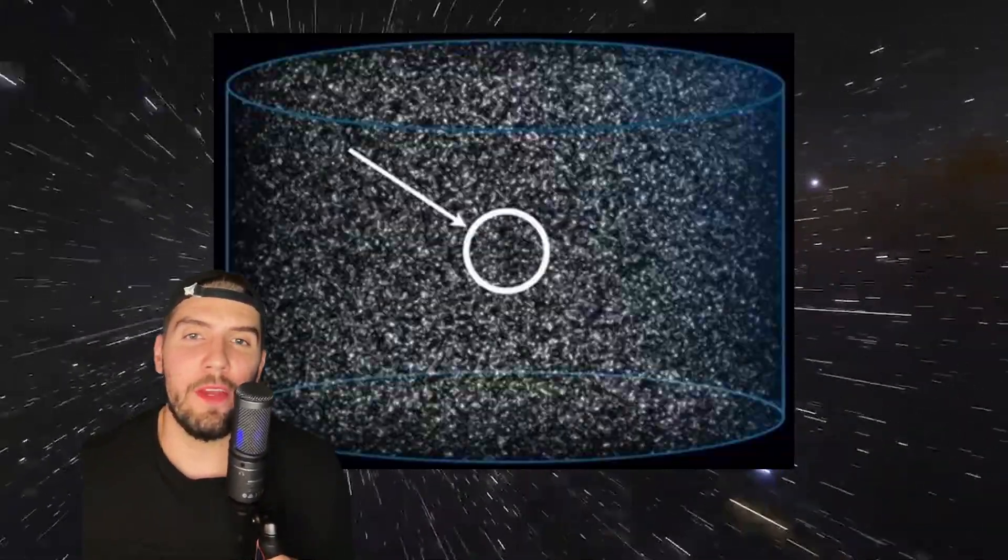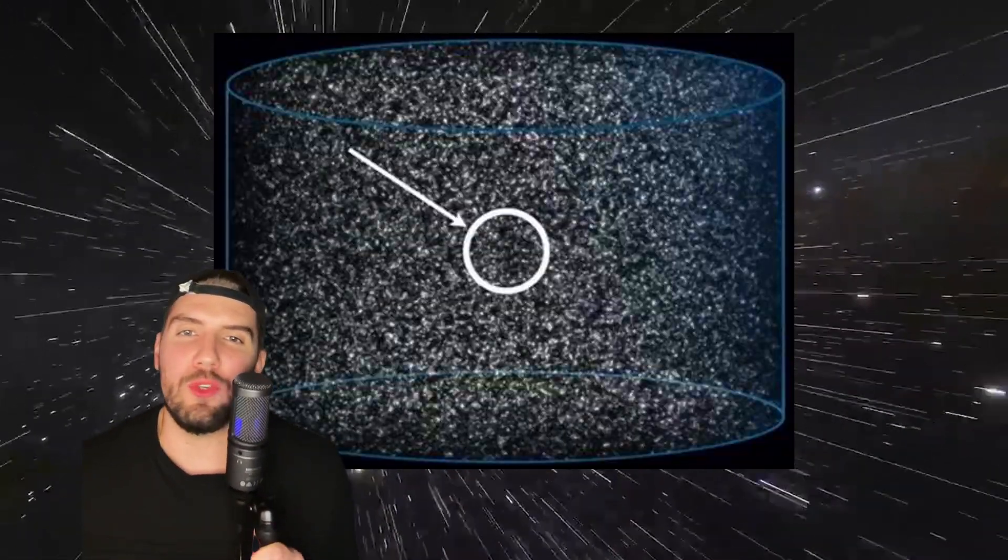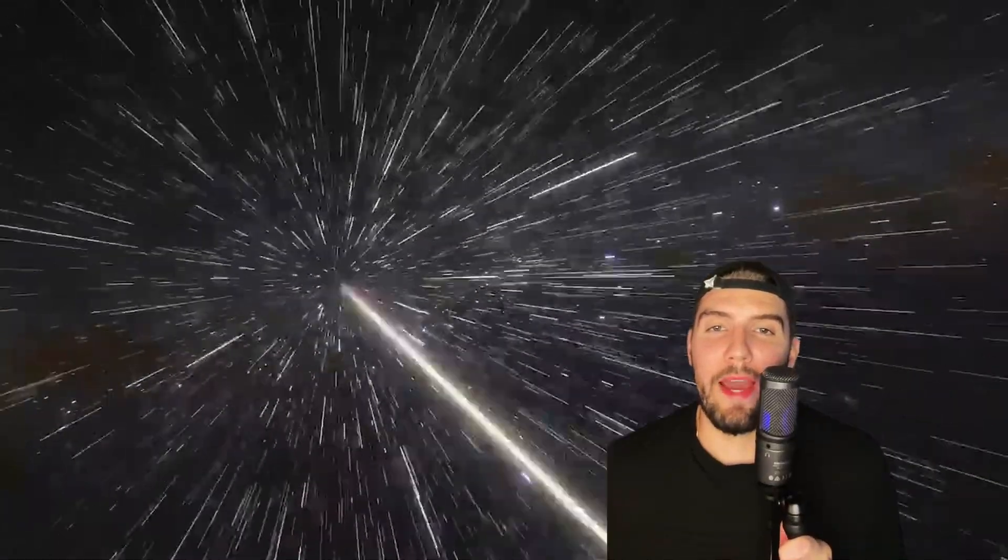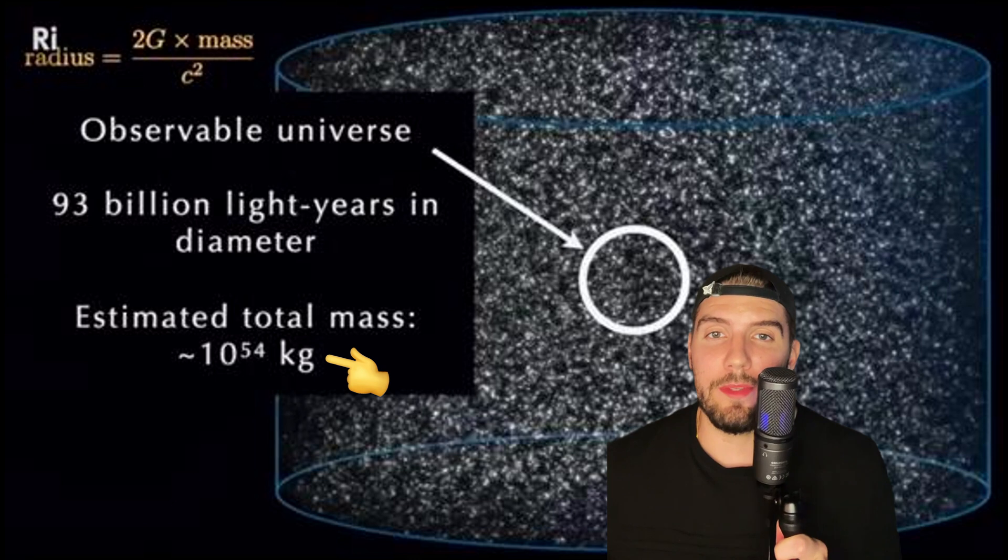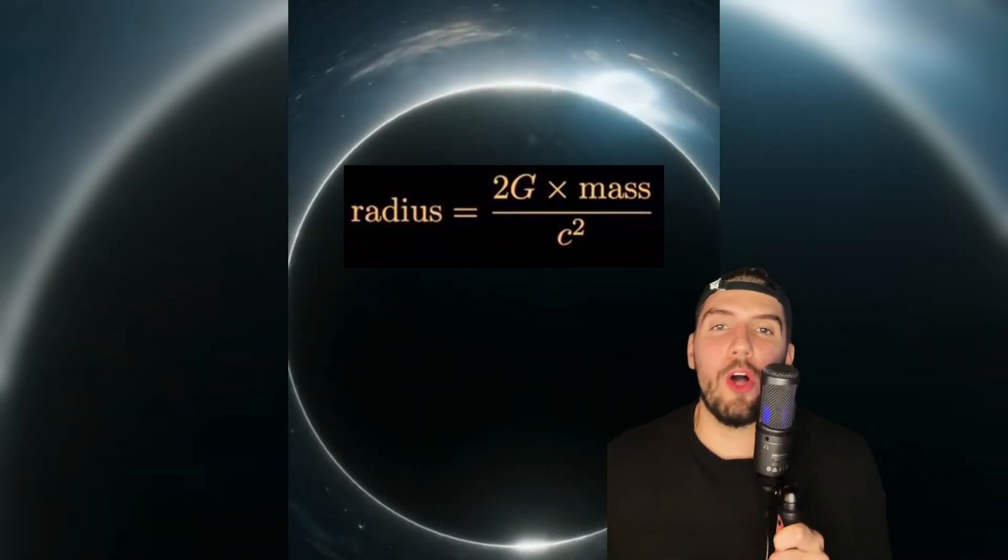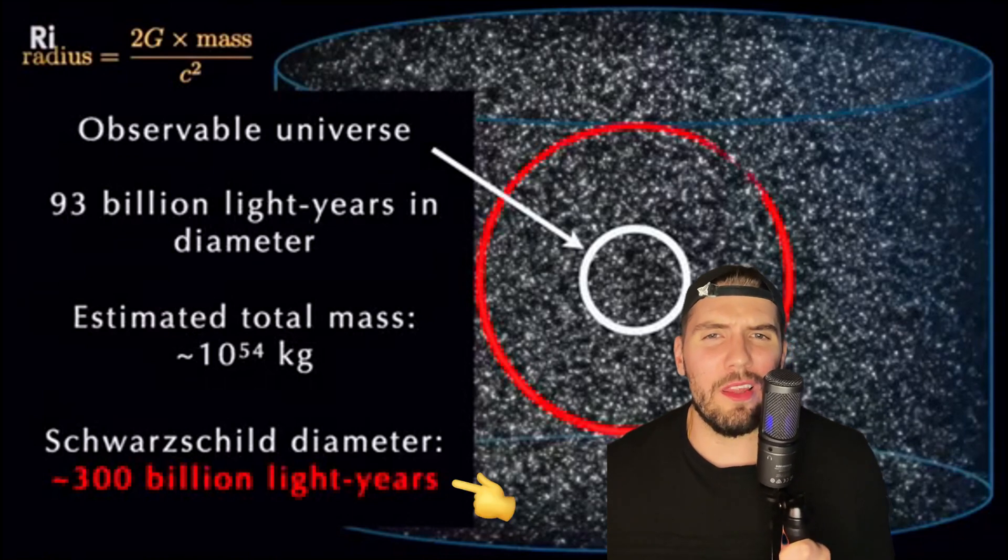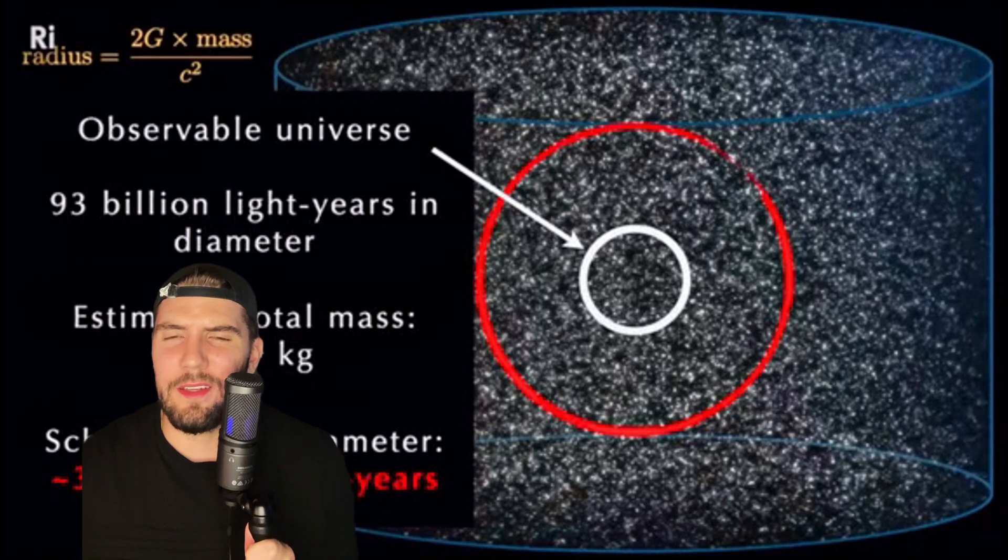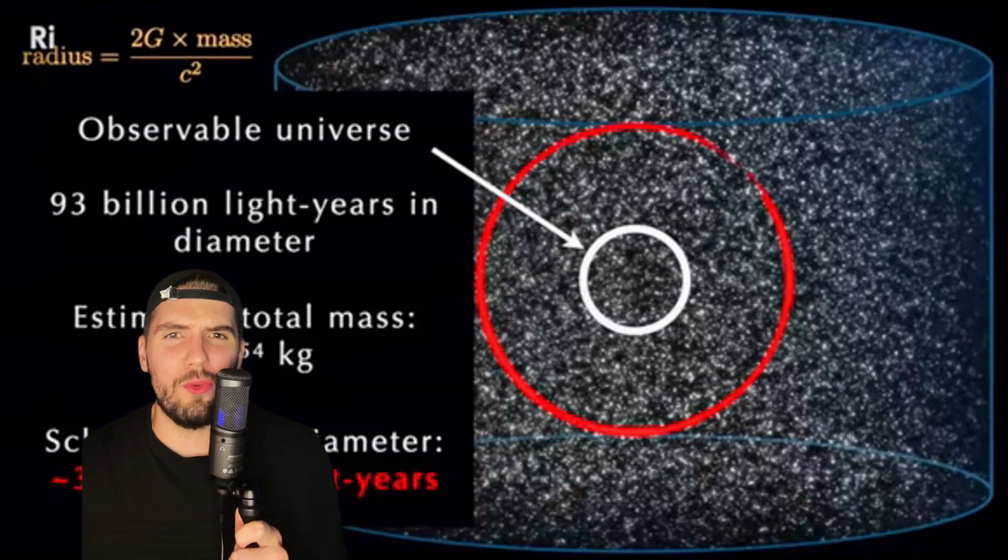So we take the total mass of this stuff, the electrons, protons, atoms, neutrinos, dark matter, and a whole bunch of stuff we don't even know exists, totaling a mass of about 10 to the 54 kilograms. We pop that into our black hole equation and find that we'd have to pack that all into a volume that's about 300 billion light years in diameter? About three times the size of our observable universe?